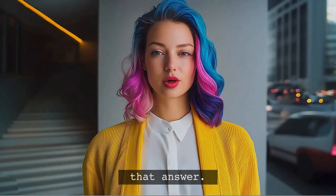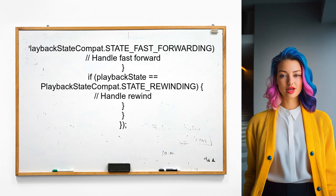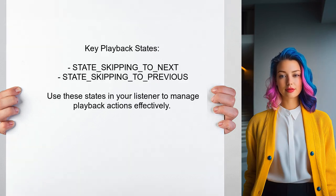Another alternative approach suggests adding an ExoPlayer listener to handle playback events. You can use constants from the PlaybackStateCompat class to identify actions like fast-forwarding or rewinding. In this listener, you can override the OnPlayerStateChanged method to check for specific playback states like skipping to next or previous, allowing you to perform actions based on user interactions.